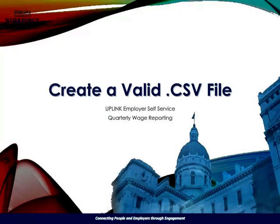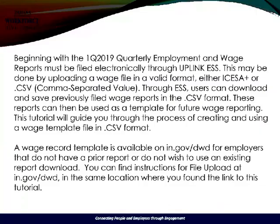Welcome to the DWD video tutorial on how to create a valid CSV file. Beginning with the first quarter of 2019, quarterly employment and wage reports must be filed electronically through Uplink ESS. This may be done by uploading a wage file in a valid format, either ICASA or CSV.